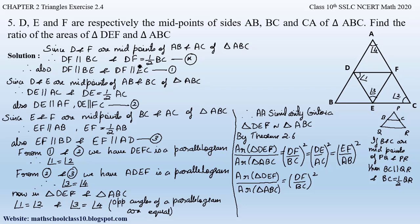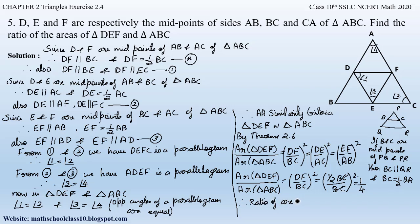We noted earlier that DF equals half of BC. Substituting: area of triangle DEF / area of triangle ABC = (DF/BC)² = ((1/2)BC / BC)² = (1/2)² = 1/4. So the ratio of the area of triangle DEF to triangle ABC is 1:4.